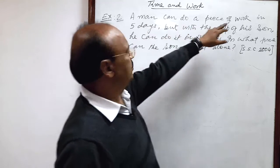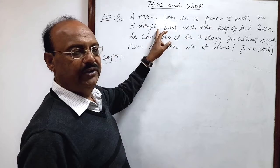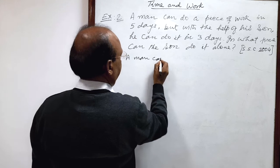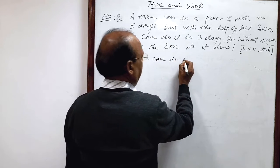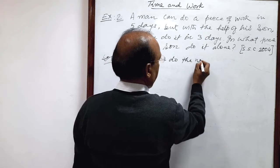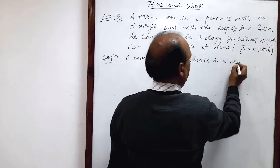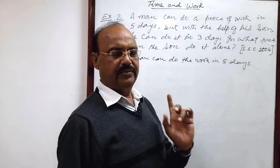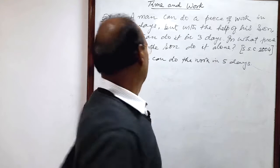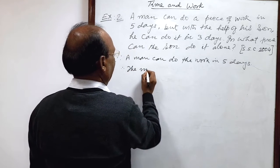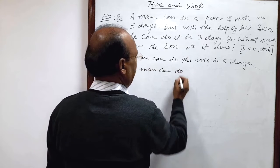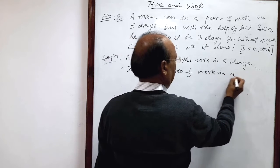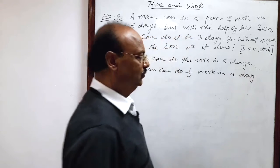Man can do a piece of work in five days. We will use here unitary method. A man can do the work in five days. So how much work will be done in one day by this man? One upon five, reciprocal of five. Therefore the man can do one by five work in a day.